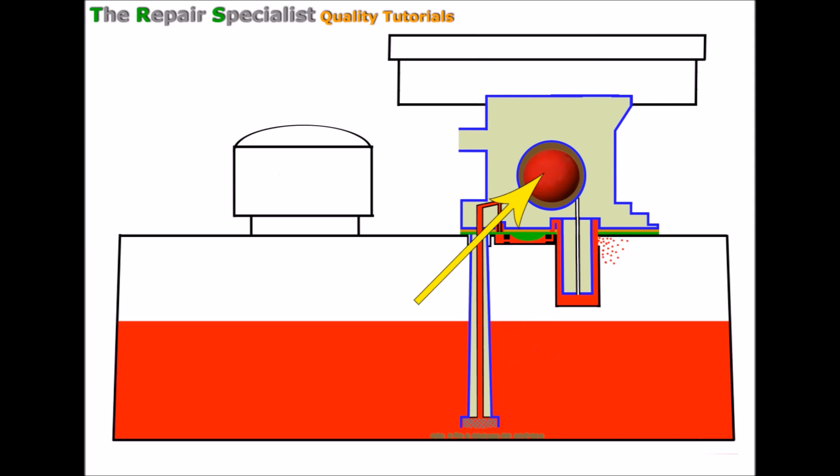So that's how the primer system works on this type of carburetor, but let's have a look now at how the carburetor works when the engine's running.